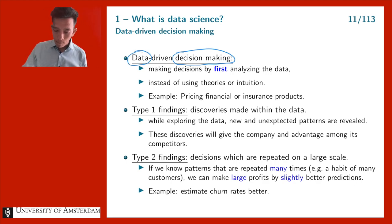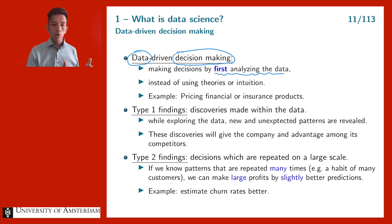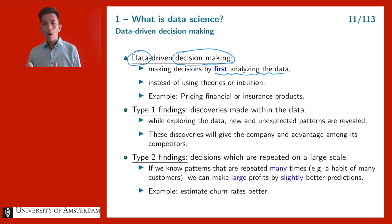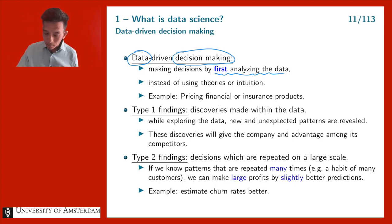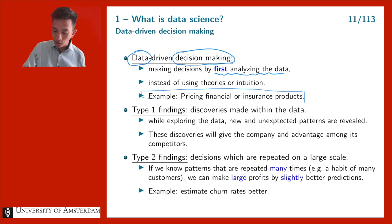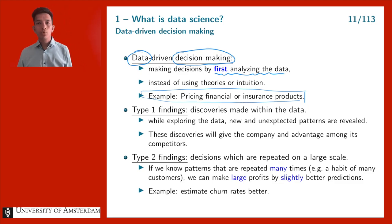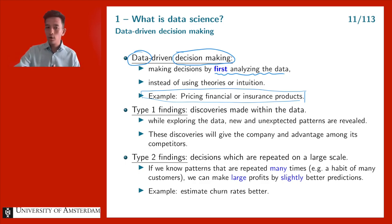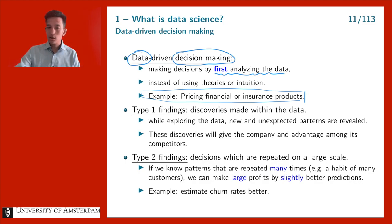We want to make decisions by first analyzing the data — we look back, see what happened in the past, and learn something from that about what we should do now and in the future. An example is the pricing of financial or insurance products. How should we price a derivative, an option written on Apple today? There are two ways to approach that.